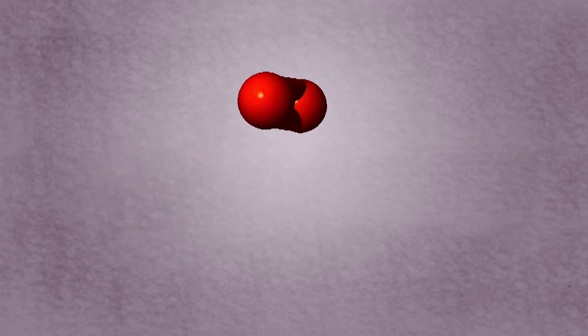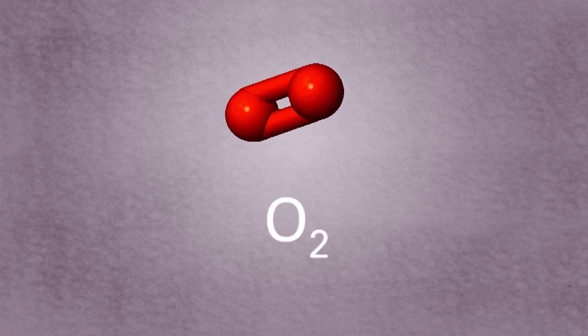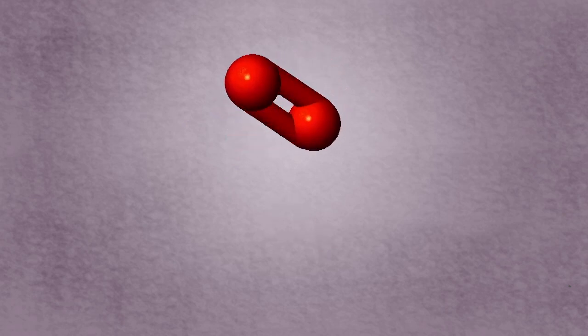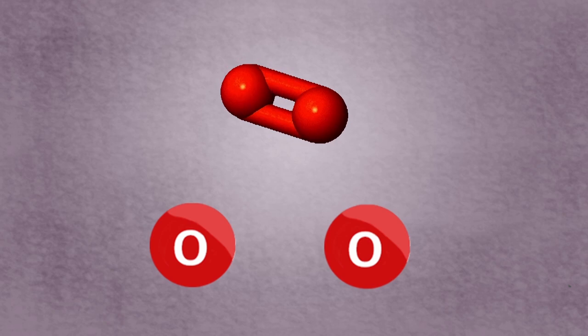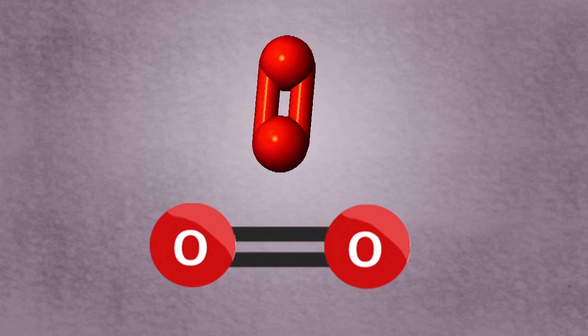Oxygen can exist as diatomic oxygen, which is the form that we breathe in and is vital for survival. In this allotrope, two oxygen atoms are held together by a double covalent bond.